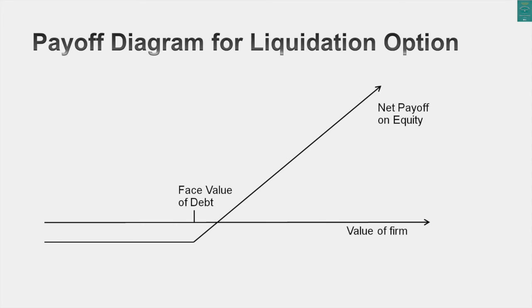Let's draw the payoff diagram on equity in a publicly traded company and the option to liquidate. If you liquidate a firm as the equity investor, you look at the value of the assets in liquidation. If the value of the assets exceeds the face value of the debt, you keep the difference. If the value of the assets is less than the face value of the debt, you get nothing — you lose what you originally paid to buy the shares. That is the insight we're going to use to value equity in deeply distressed companies.